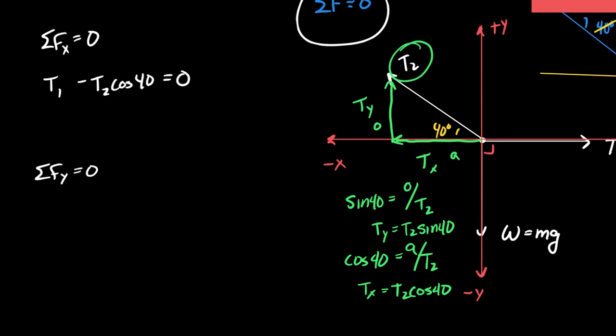We do the same thing in the y direction. I have Ty pointing up — that's T2 sine 40 — and I have mg pointing down. So T2 sine 40 minus mg equals zero.